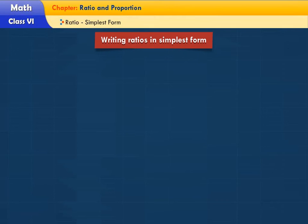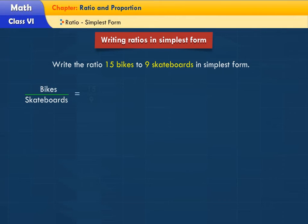Writing ratios in simplest form. Write the ratio 15 bikes to 9 skateboards in simplest form. Let's observe the following.